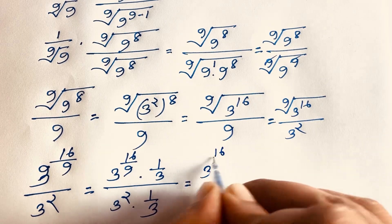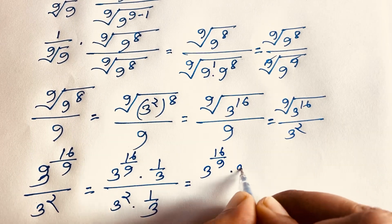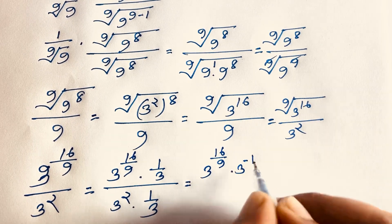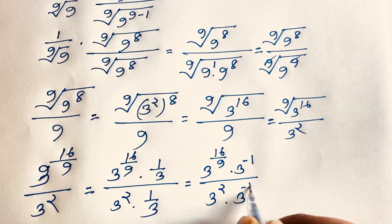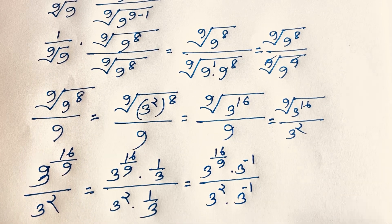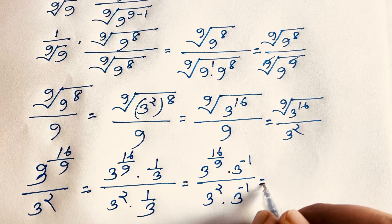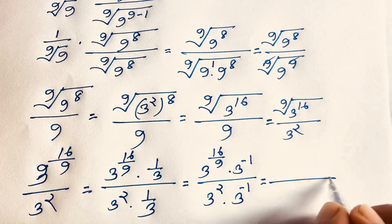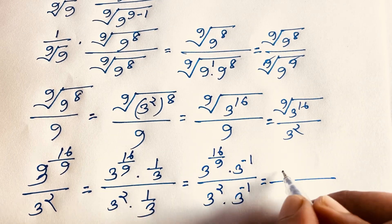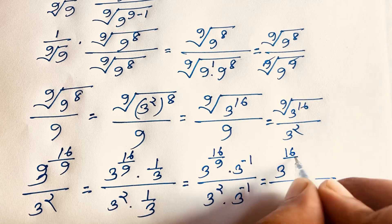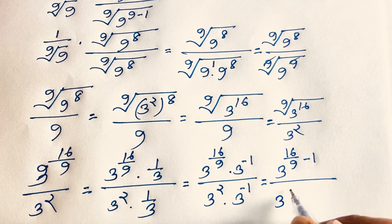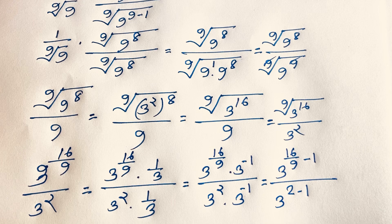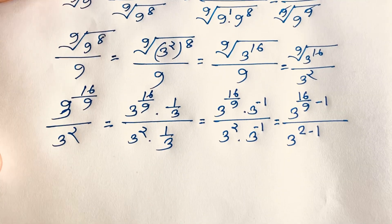We find it is 3 to the power 16/9, times 3 to the power −1, and also 3 to the power 2, times 3 to the power −1. Since the bases are the same, we add the exponents: 3 to the power (16/9 − 1), and 3 to the power (2−1).